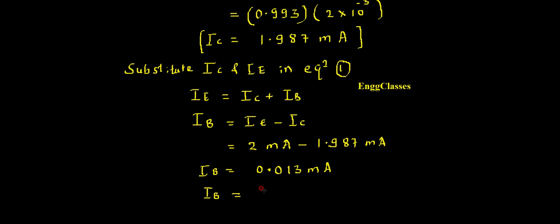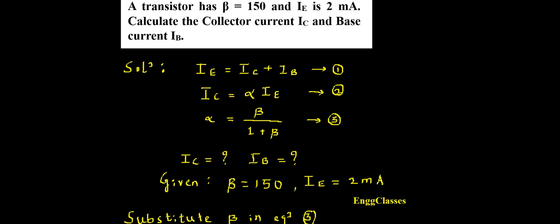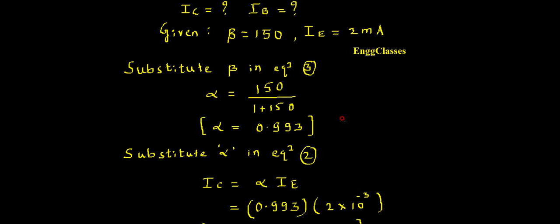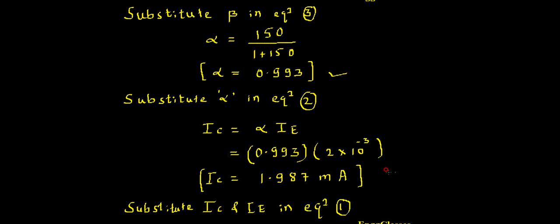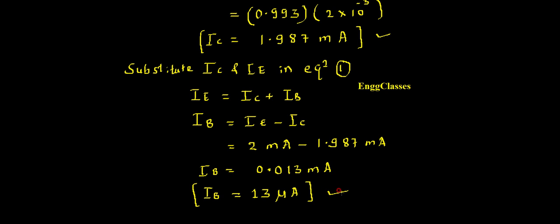Rearranging 0.013 milliamp into microamperes gives IB as 13 microamperes. So in this numerical, given IE and beta, we found the value of alpha first, then used it to find IC, and finally found IB. I hope you understood this step-by-step explanation. If there are any doubts, please let me know in the comment section. Thank you so much for watching.